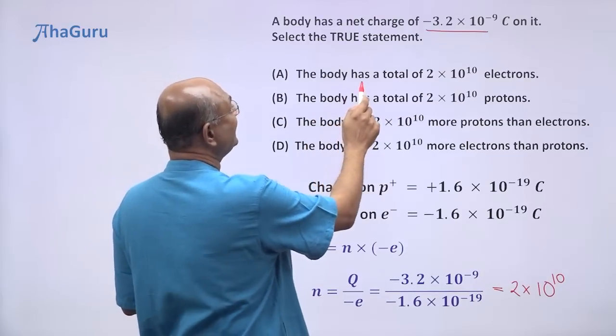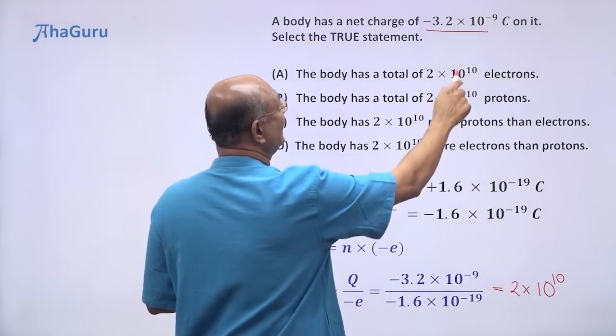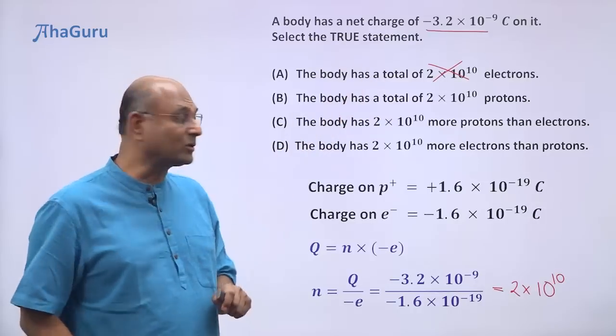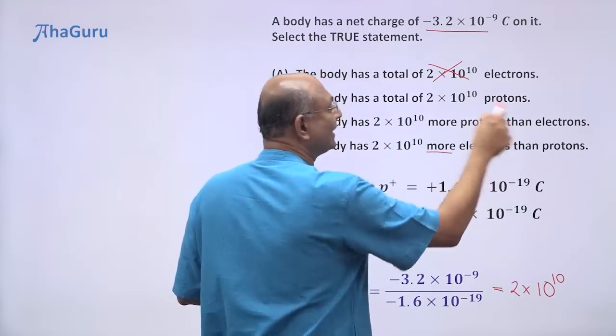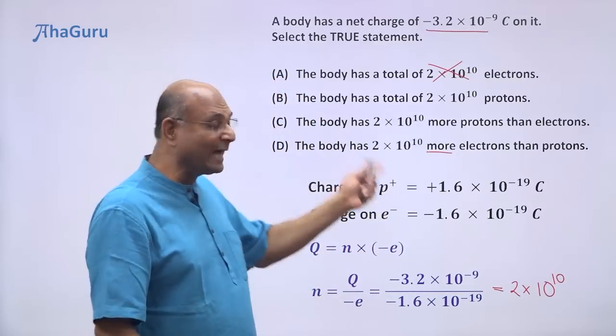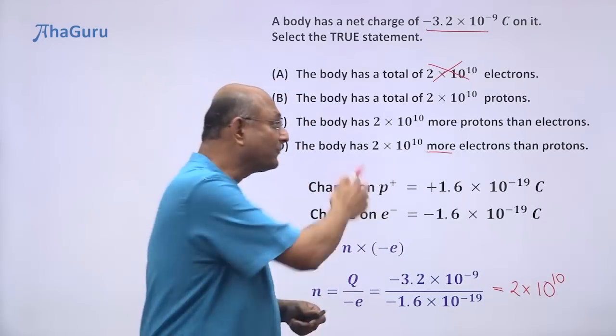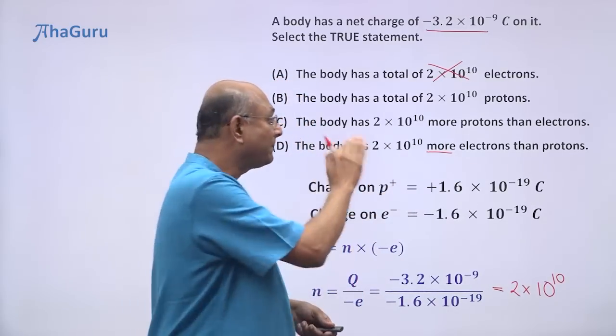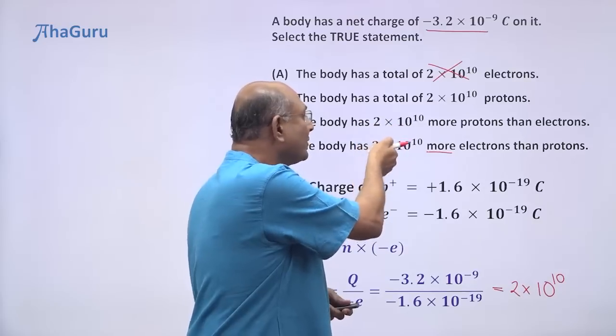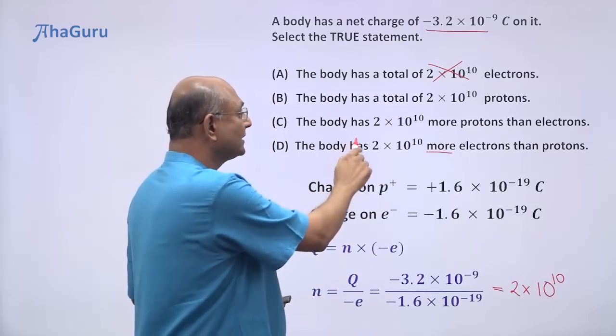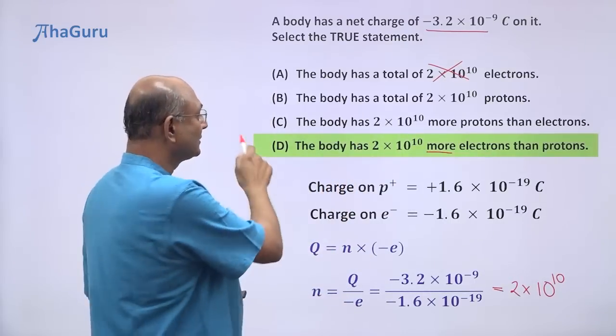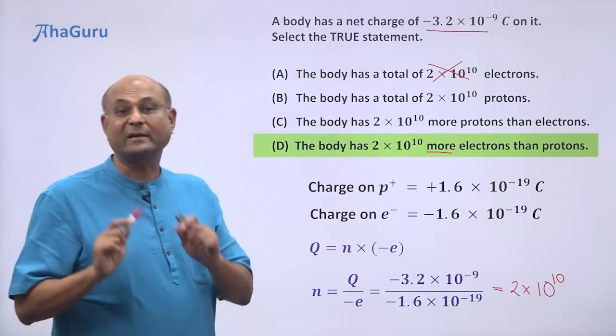So you can't say that it has 2 × 10^10 electrons. That is not right. That is not the total. It has 2 × 10^10 more electrons than protons. It will have probably 10^24 protons, 10^24 plus 2 × 10^10 electrons. So the excess electrons is 2 × 10^10. So the correct answer is option D.